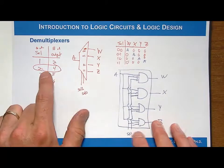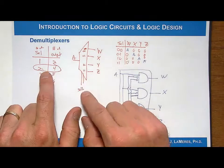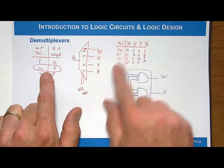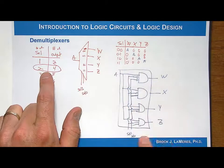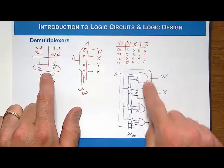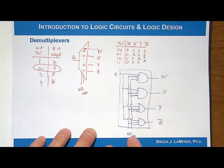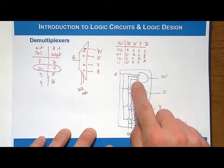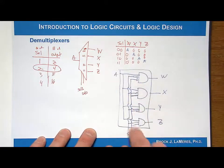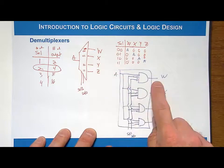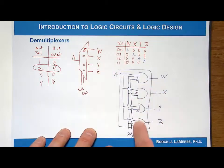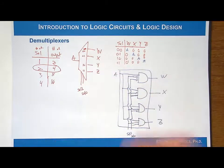So we've already kind of worked through what a 2 to 4 multiplexer looks like. There's a symbol, there's a truth table, and then there's the logic diagram, where each of the outputs is driven by a product term, which is going to include the input and the select lines, and then inverters are inserted accordingly in order to get A to pass to the output, depending on whatever specific select line code you have.